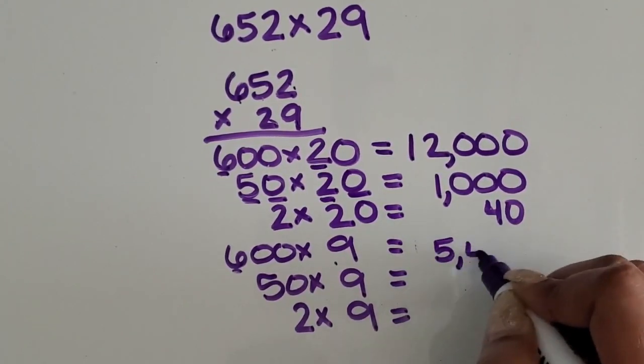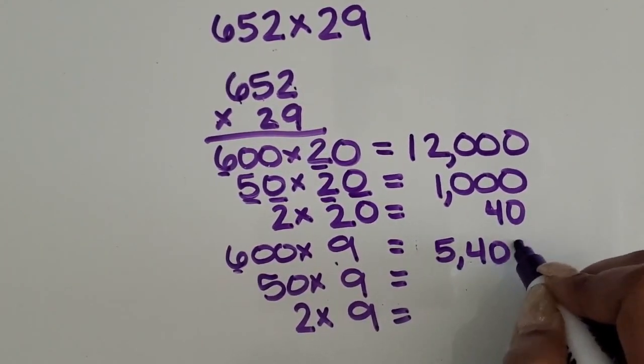There are 5,000s, 400s, 0 tens, and 0 ones.